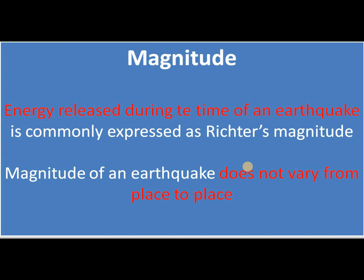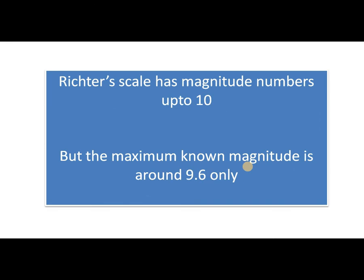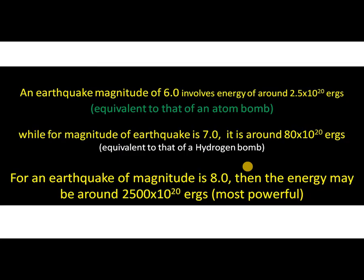Magnitude means the energy released during the time of an earthquake, and is usually expressed as Richter's magnitude. Magnitude does not vary from place to place or area to area — this is the difference between intensity and magnitude. An earthquake of magnitude 6 involves energy of around 2.5 × 10²⁰ ergs, equivalent to an explosion of an atom bomb. An earthquake of magnitude 7 involves around 80 × 10²⁰ ergs, equivalent to that of a hydrogen bomb.